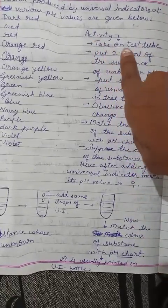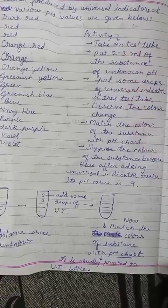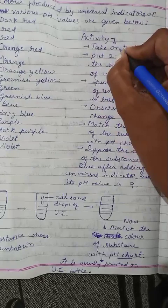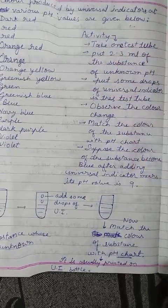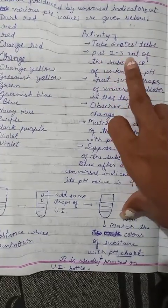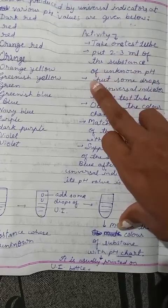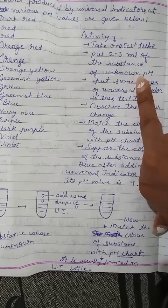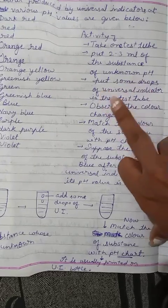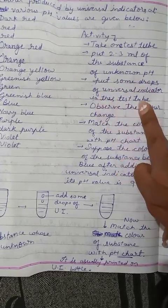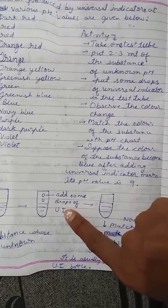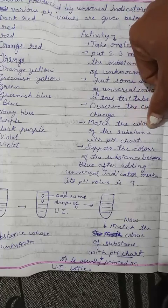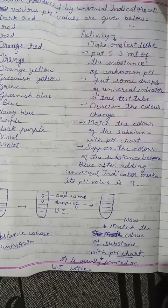Activity: Take one test tube. Put 2 to 3 ml of the substance of unknown pH. Then put some drops of universal indicator in the test tube. Observe the color change. Match the color of the substance with the pH chart.